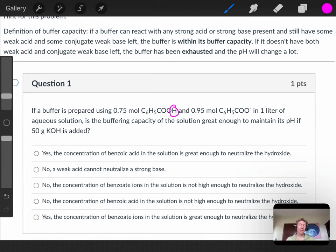It says it's in one liter of aqueous solution. The question is: is the buffering capacity of the solution great enough to maintain its pH if 50 grams of potassium hydroxide is added?